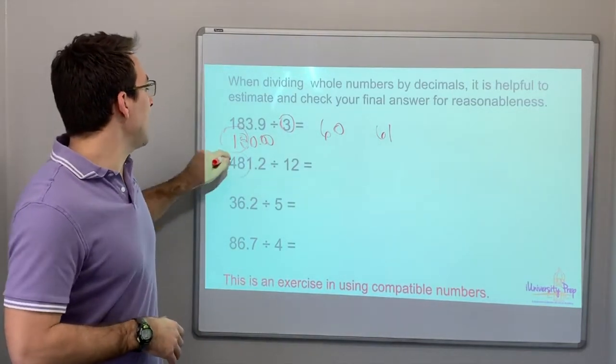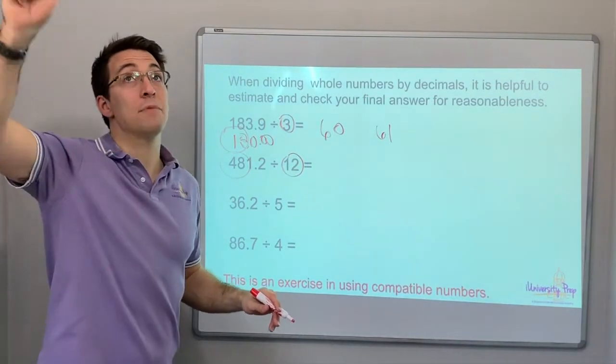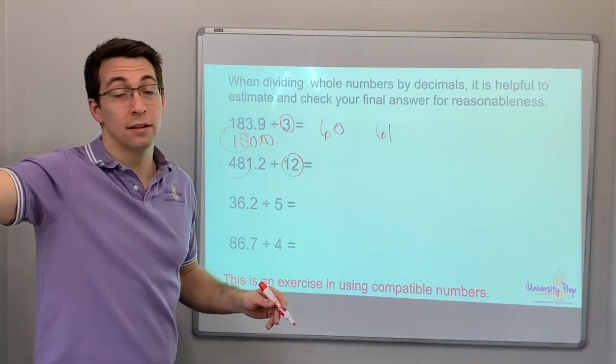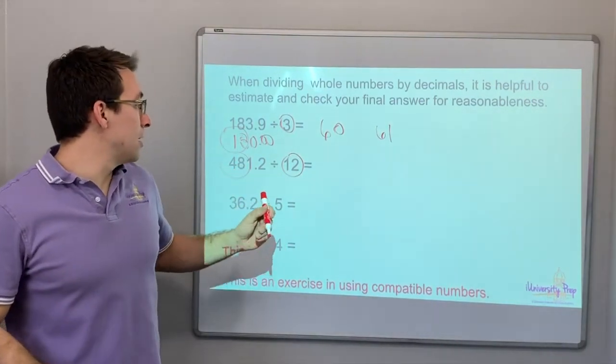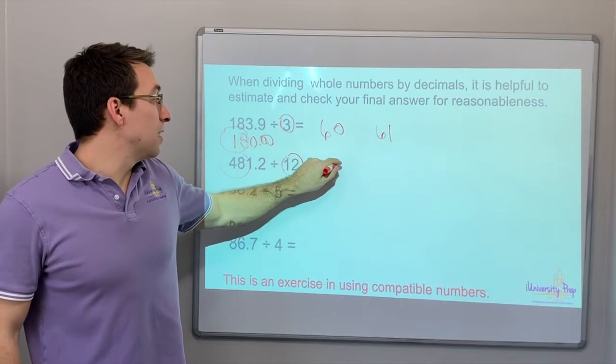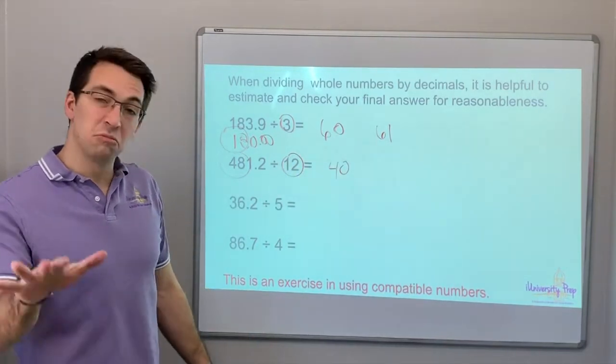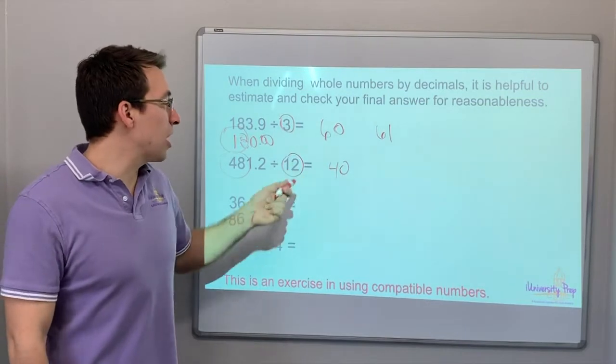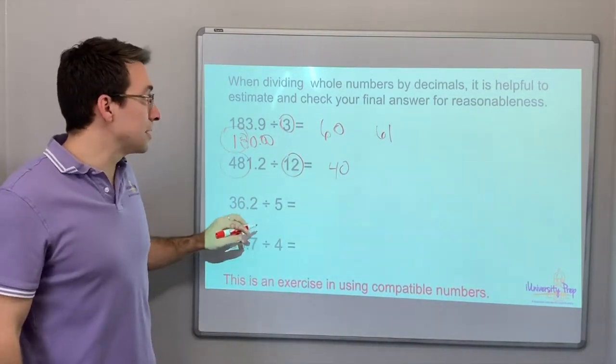Okay, 48 and 12. 12 times 4 is 48. It's compatible numbers. So, 481 divided by 12 is going to be 40. Isn't that cool? Right in there. 40 times 12 is 480. So, really close. That's a good estimate.